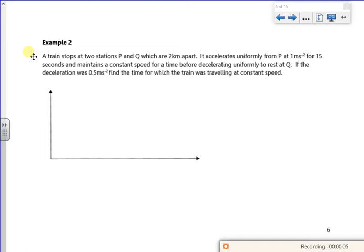Hi, this is a second video for the second lesson. So let's have a look at this then. It says the train stops at two stations P and Q which are two kilometers apart. It accelerates uniformly from rest from P at one meter per second squared for 15 seconds. So if I'm going from rest, I'm going from zero, and if I'm going up by one meter per second squared for 15 seconds, I'm up to 15 meters per second.